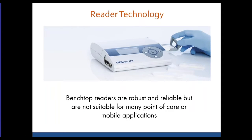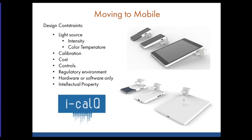The other exciting development in lateral flow is readers — the ability to quantify results. With your eye you're good at yes/no, but for actual numbers you need a machine readout. Benchtop instruments exist but are not suitable for point-of-care or mobile applications. One company we've been working with is iCalQ, which has developed hardware that attaches to cell phones and iPads, bridging the gap between visual reading and quantitative measurement. Design constraints for such readers include light source, color temperature, calibration, cost, controls, regulatory environment, and intellectual property.